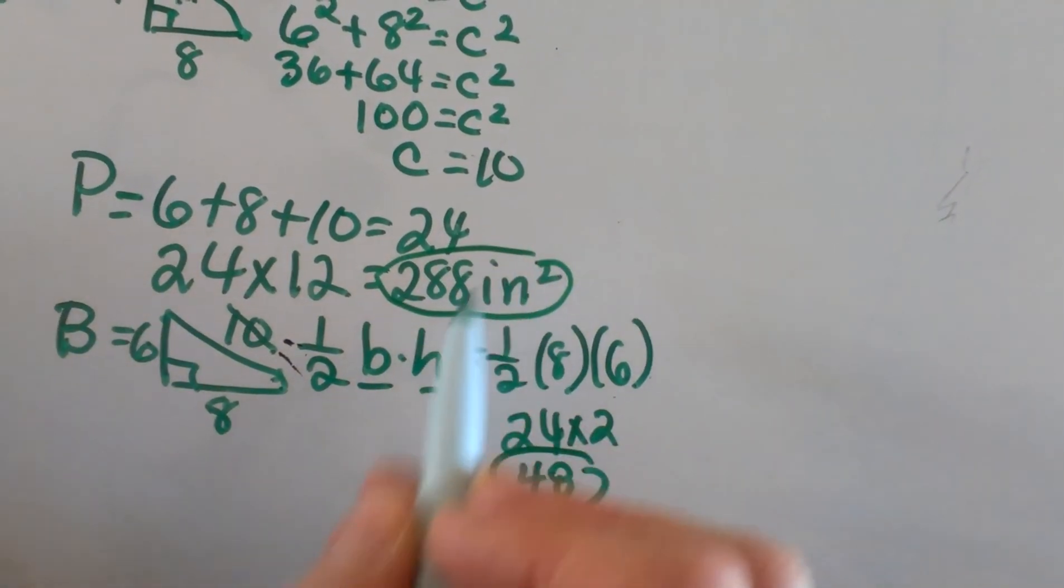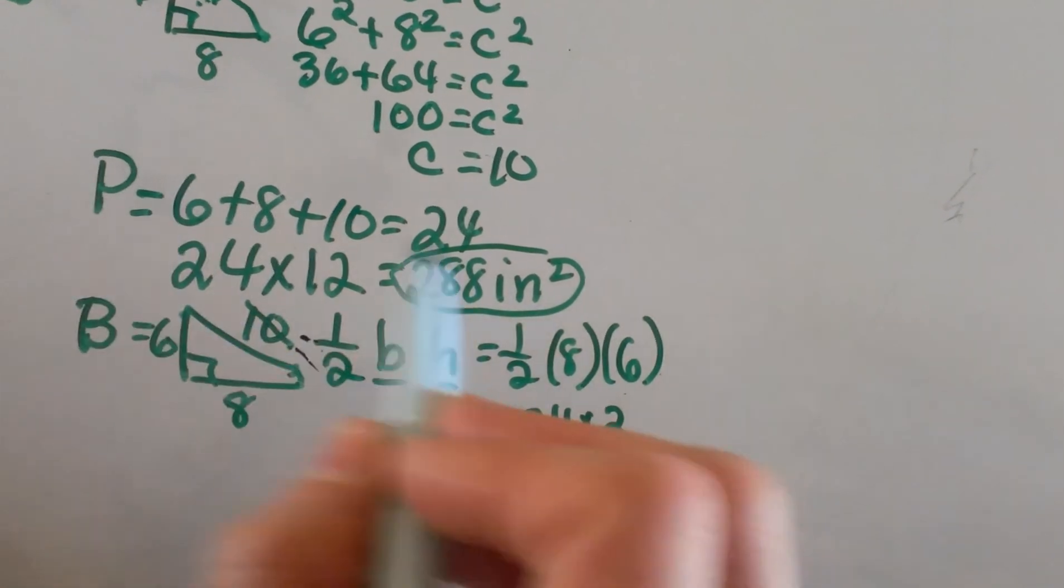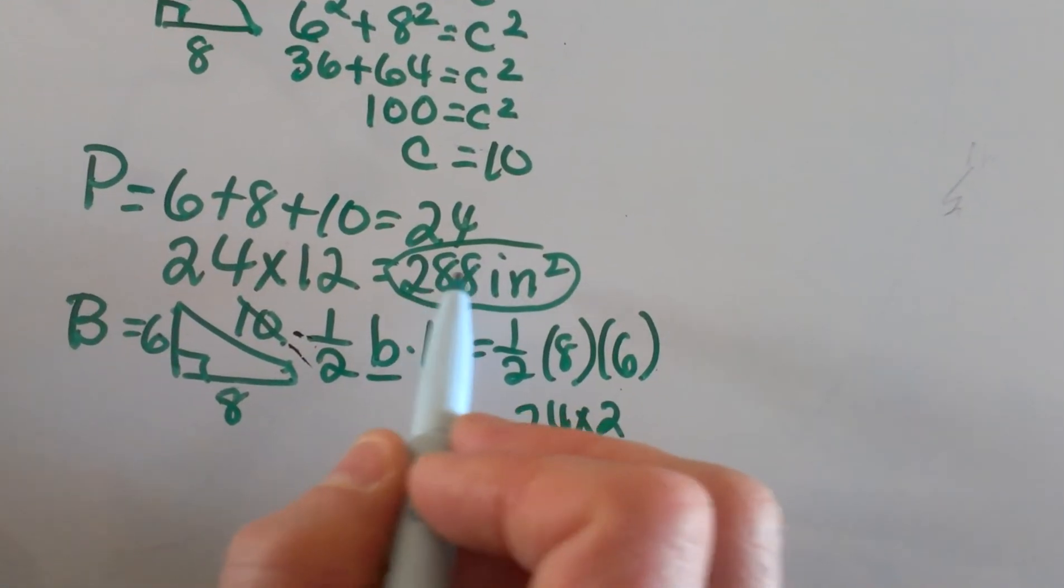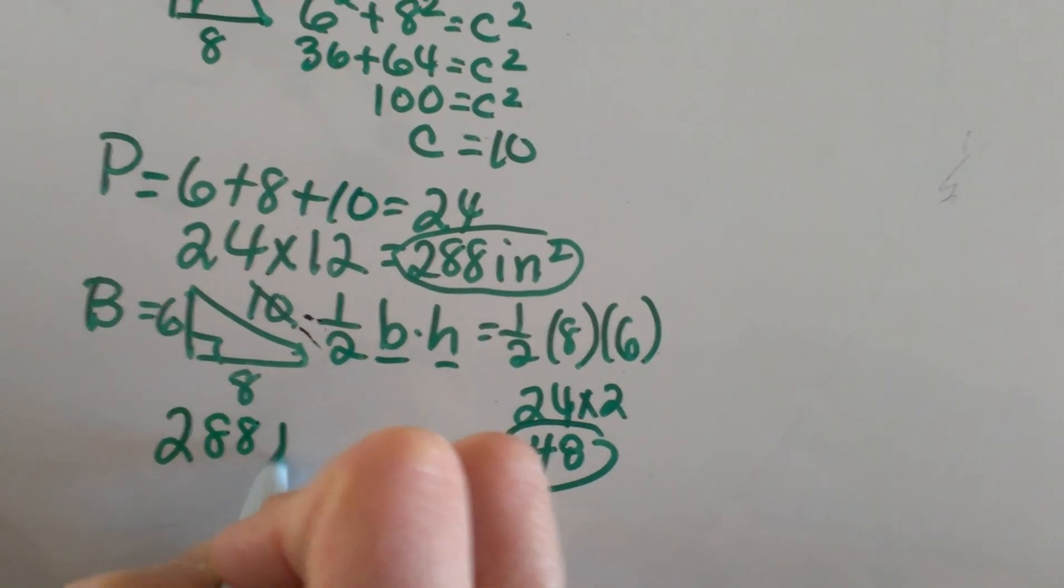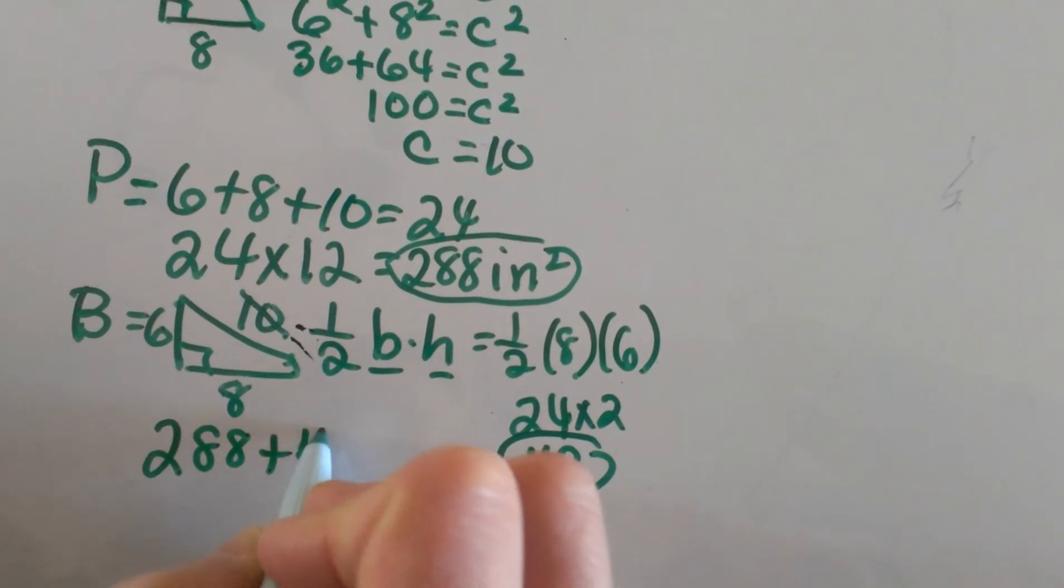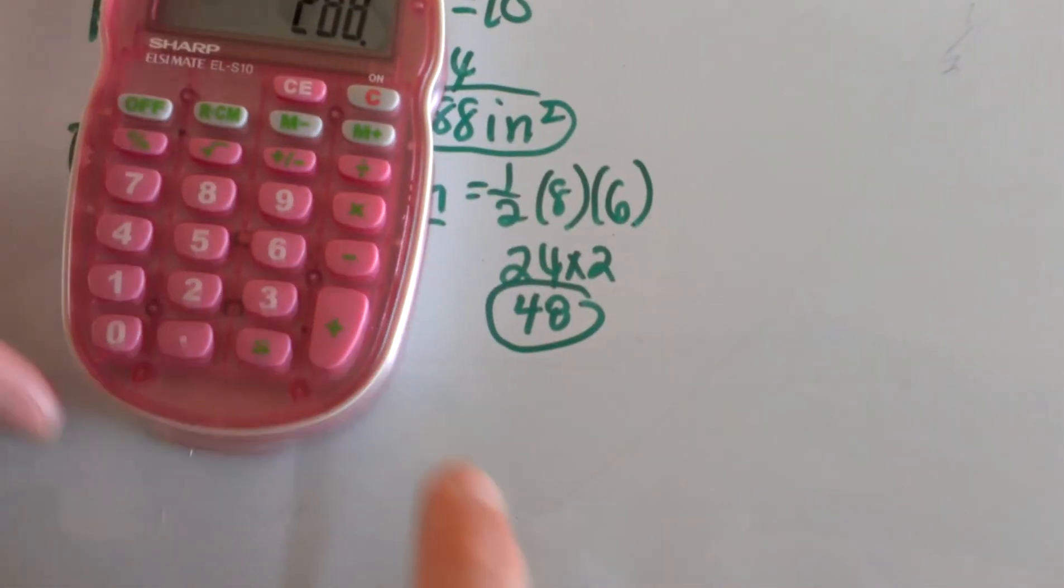Now I'm going to take these two separate formulas - the area of the lateral area plus the area of the two bases - and add those up. So I've got 288 + 48, and that adds to the total surface area.